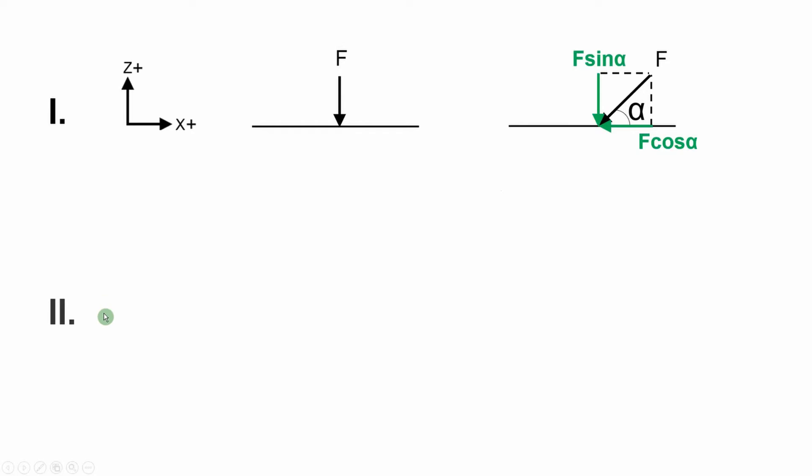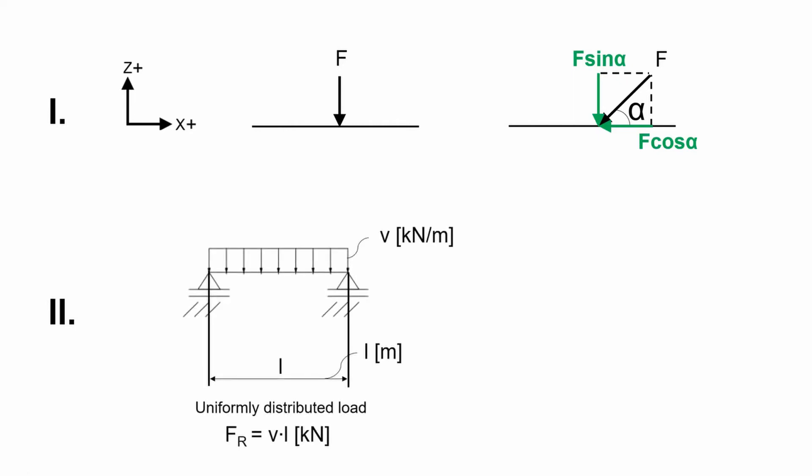And resultant forces. They derive from different types of loads applied on the structure. These loads can be uniformly distributed. Here the resultant force is the product between the load's value and the length on which the load was applied on. And the point of application of the resultant force is at half the length the load was applied on.